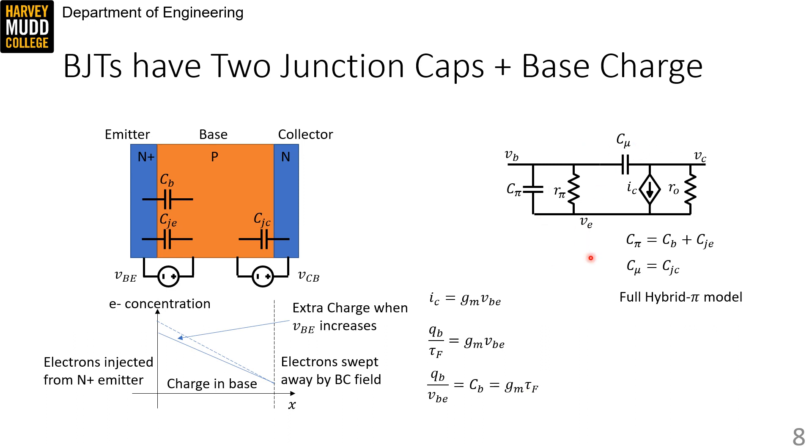C pi from the base to the emitter and C mu from the base to the collector. C pi is equal to CB plus CJE. C mu is just equal to CJC. This model is called the full hybrid pi model of the BJT, I guess because this bridge across the top kind of makes it look like the Greek letter pi.